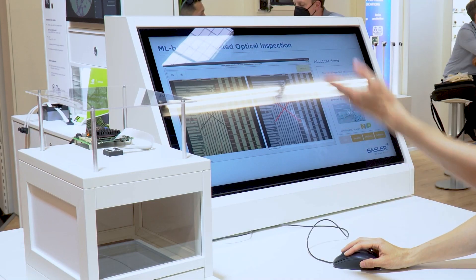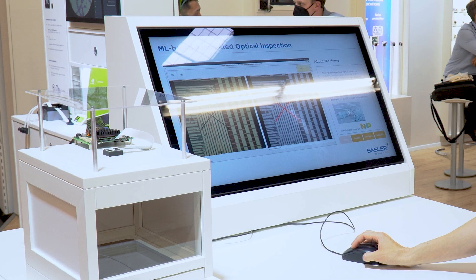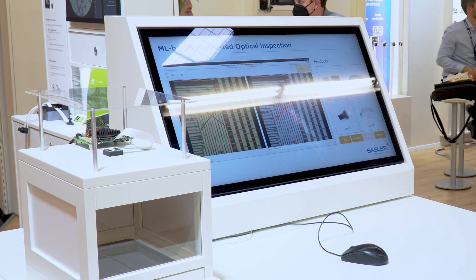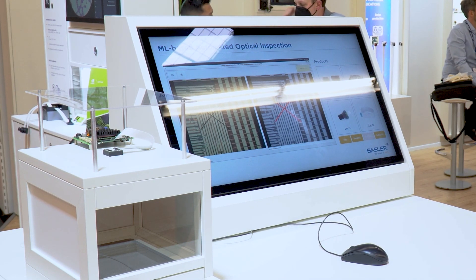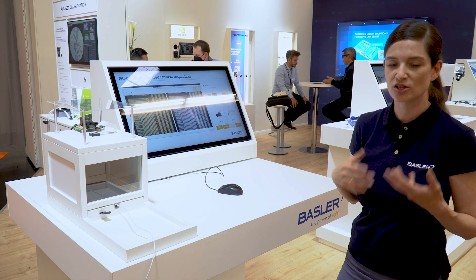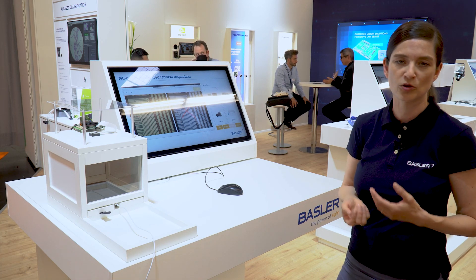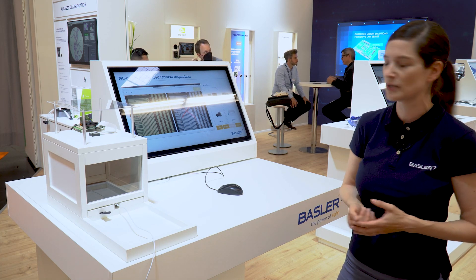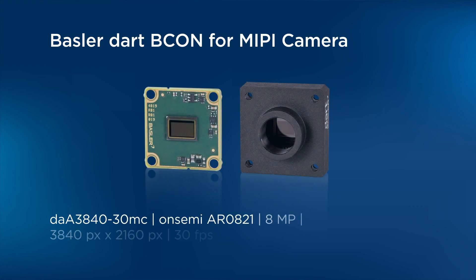What is this system consisting of? We have different parts in there, but of course it's important — this is in collaboration with our partner NXP. First of all, let's have a look at the vision part: we have a Basler Dart B-Control MIPI camera module, 8 megapixel, with an onsemi AR0821 sensor.